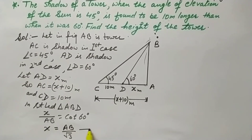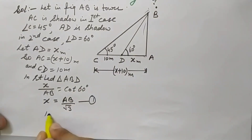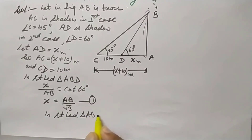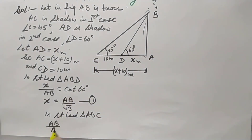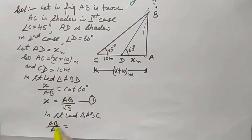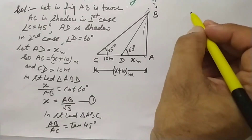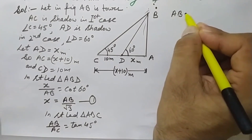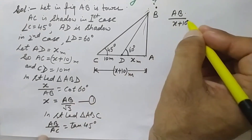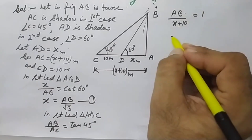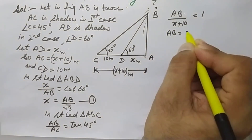Now in right-angled triangle ABC, AB over AC equals perpendicular over base, which is tan 45 degrees. We know tan 45 is 1. So AB over AC equals 1, and AC is X plus 10. Therefore AB over (X plus 10) equals 1, which gives AB equals X plus 10.